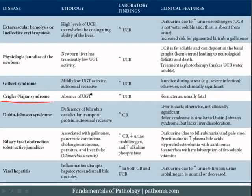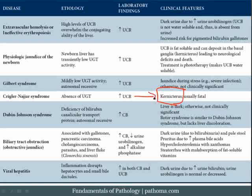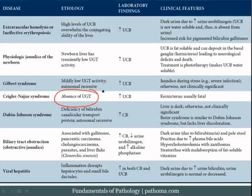In Crigler-Najjar syndrome, there is a more severe decrease in UGT — in fact, a near absence of UGT. With a near absence of UGT, you get very high levels of unconjugated bilirubin. Because this is a genetic disorder, it would be seen in the fetus and could result in kernicterus. One way to remember it: Crigler-Najjar sounds like a villain, and represents a complete absence of UGT, which would produce kernicterus and be fatal.